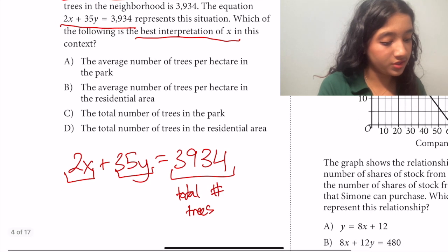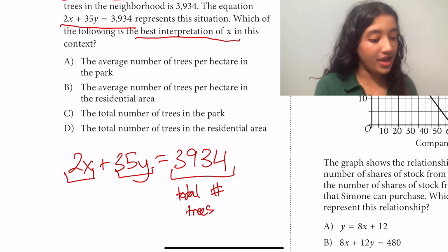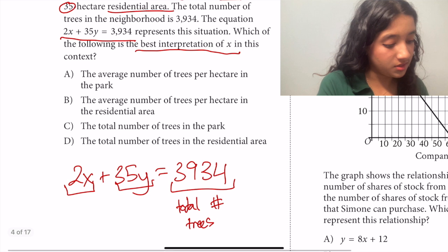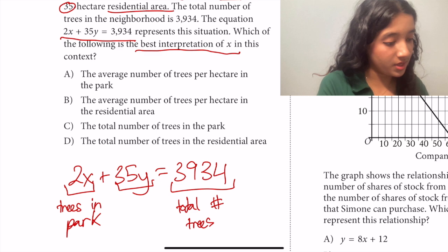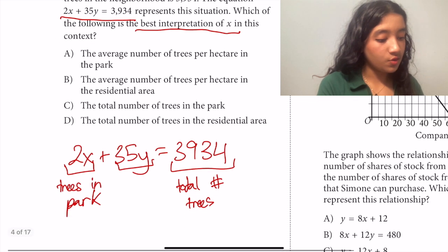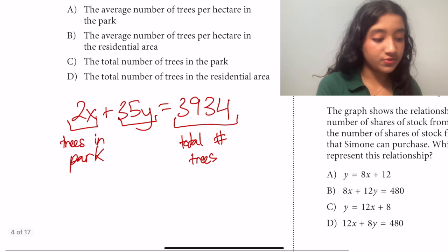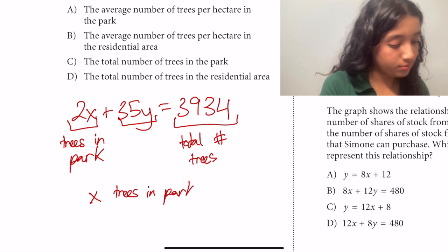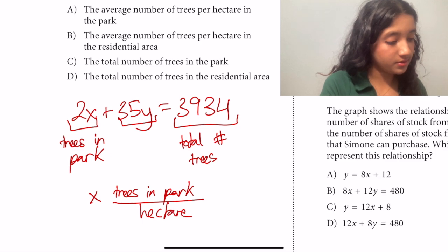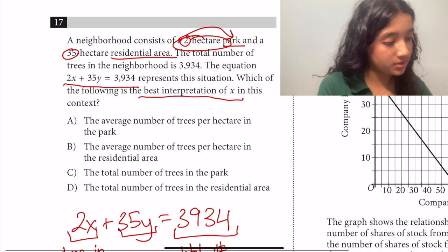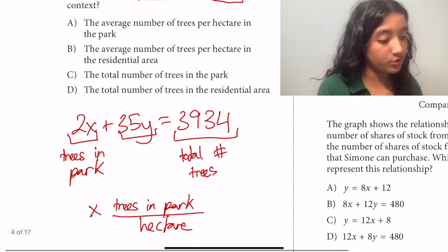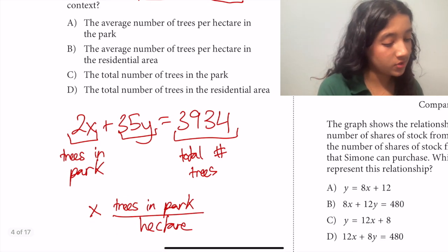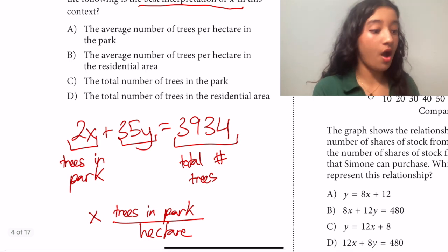So we only want to look at the term that has an x in it because we're only focusing on the meaning of x. And we have that 2x will be the number of trees in the park because we remember that 2 relates to the park. So if 2x represents the number of trees in the park and we just want the number of x, that's the number of trees in the park per hectare because we remember that this was for 2 hectares but we only want x, so that's just number of trees in the park per hectare. And we can see that that's exactly what option A says.